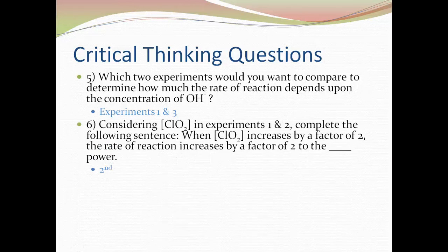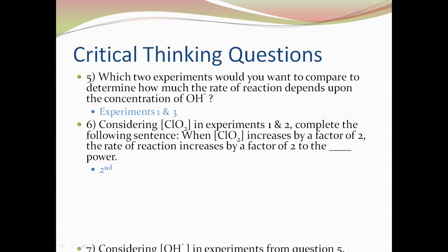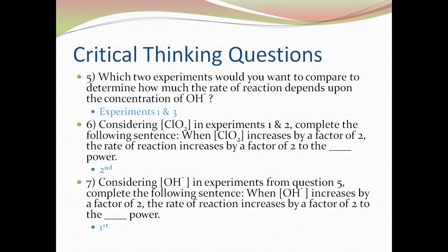Number 6. The answer is to the second power, which means the rate of reaction is the concentration raised to the second power. Number 7 is the first power, which means the rate of reaction will increase by the same factor. There's no special calculations, it's just the same factor, whereas in number 6, it was double, or it was to the second power.